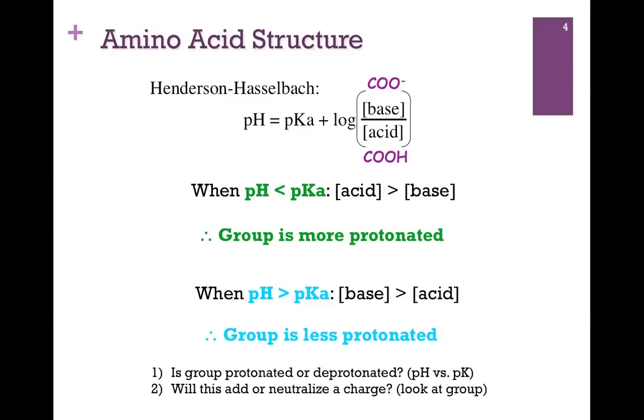So to know the charge on an individual group, we have to first ask, is the group more or less protonated? For that, we follow our simple rule of pH versus PK. And then we have to ask ourselves, is this going to add or neutralize a charge on the group? And for that, we have to look at the group itself. In this example, we have a carboxyl group. If it's more protonated, it is uncharged. If it's more deprotonated, it carries a negative charge. Notice it would be different for an amine group. If it were more protonated, it would carry a plus charge. If it were more deprotonated, it would be neutral.